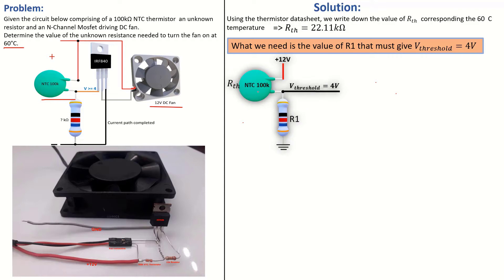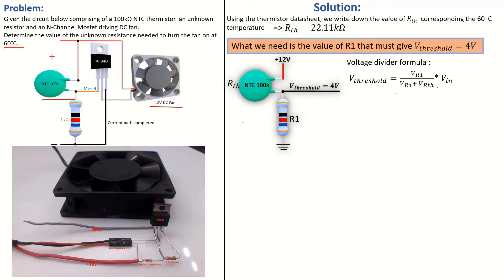Here is our circuit: we have the thermistor and R1, with 12 volts from the supply, and a V-threshold of 4 volts that must go into the gate of the N-channel MOSFET — completing a voltage divider circuit. The voltage divider formula is: V-threshold equals the voltage drop across R1, divided by the voltage drop across R1 plus the voltage drop across RTH, times the input voltage.